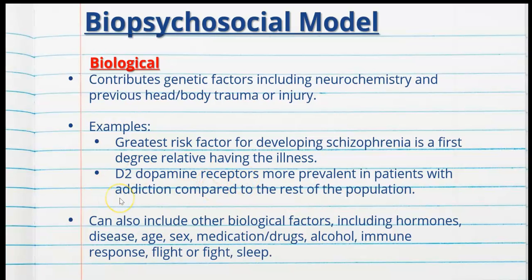There are many other biological factors that can affect us. These include different hormones such as testosterone, estrogen and adrenaline; certain diseases; age, since different hormones are released and different metabolic occurrences happen as we age; biological sex; medication or drugs; alcohol; immune response; the fight-or-flight stress response; and how much sleep a person has obtained. All of these affect us biologically, physically and chemically.